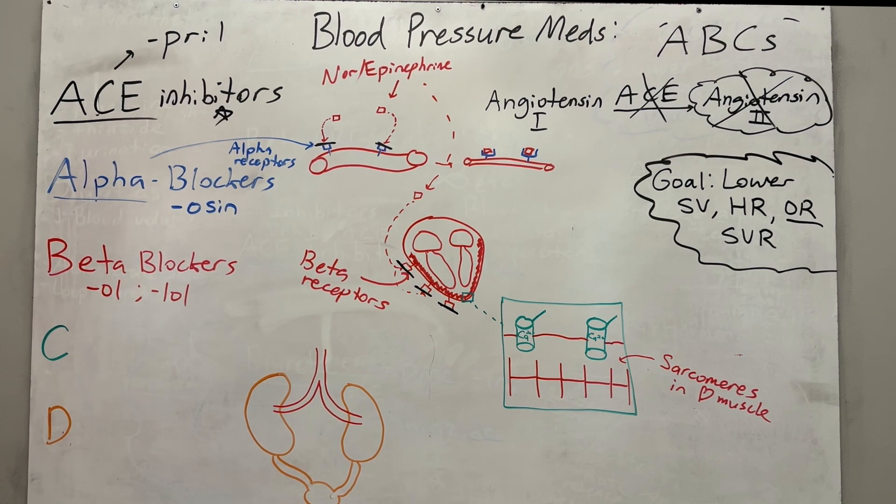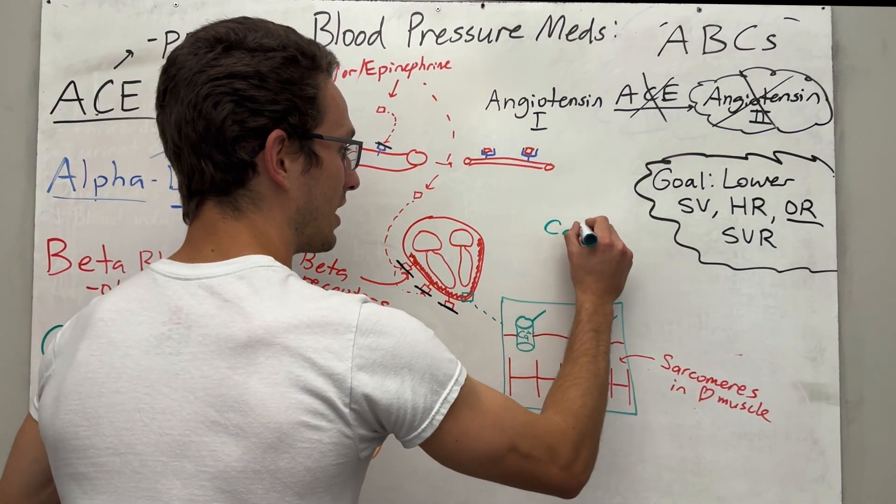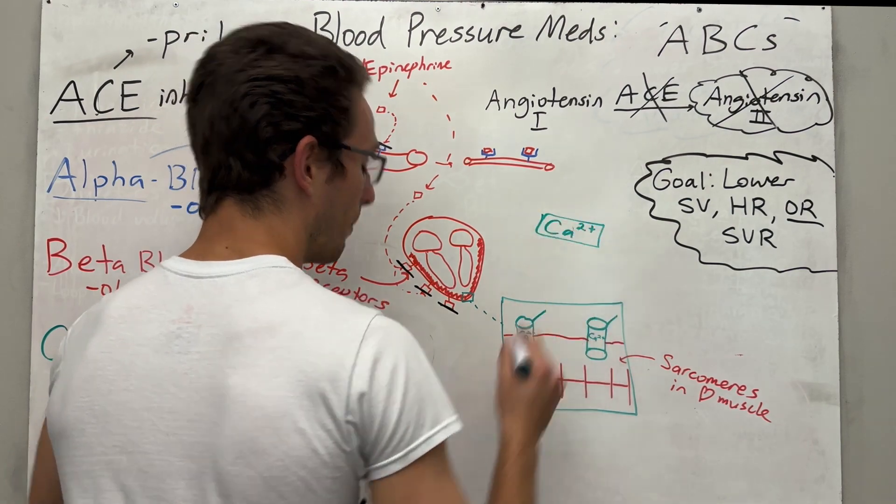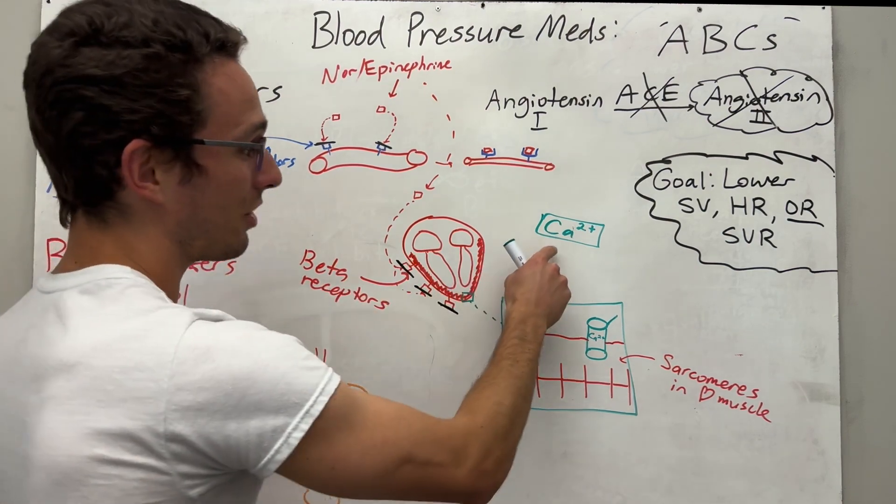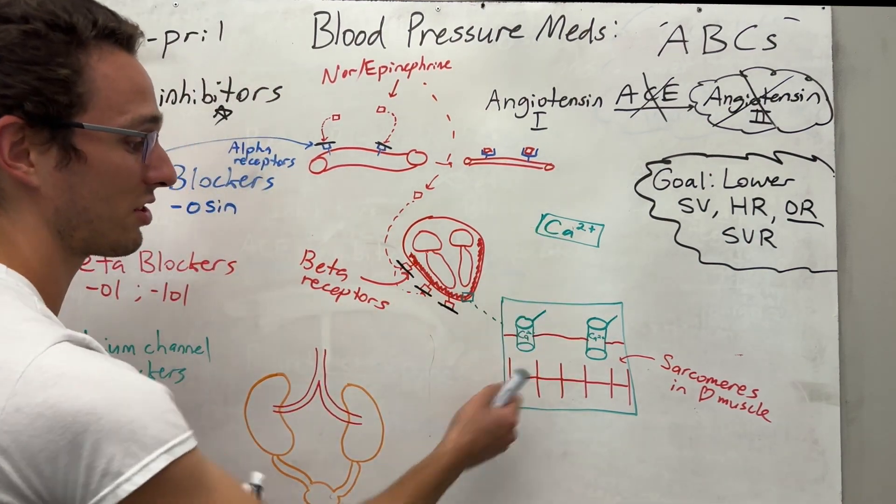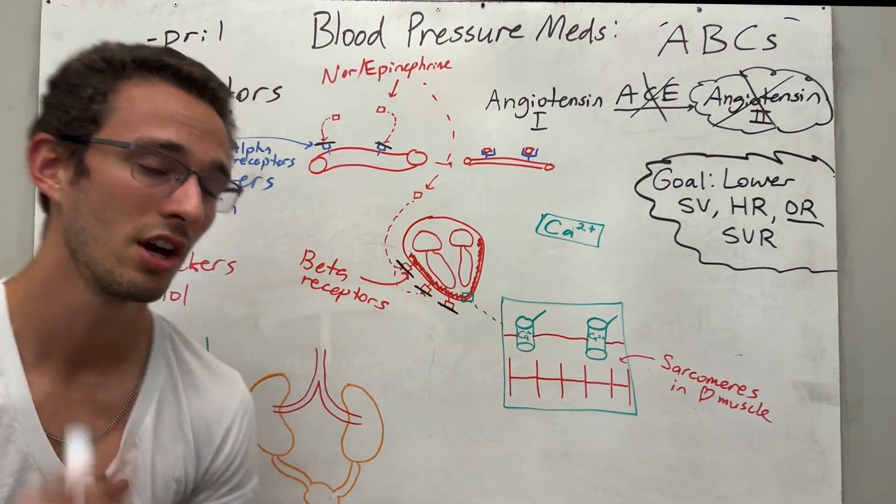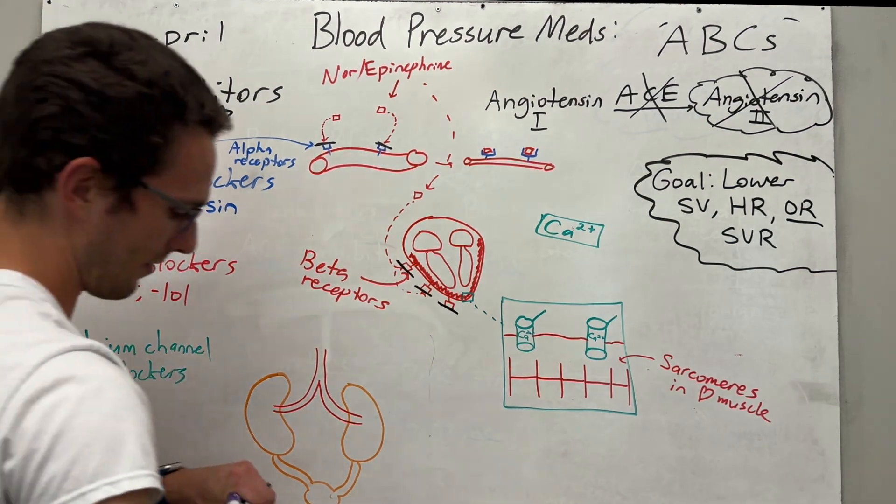Next one up, we've got C. C stands for calcium channel blockers. If you don't know this already, you need to. Calcium, calcium as the ion is a very big indicator of muscle contraction. In fact, anytime we're constricting arteries or we're beating the heart, it takes calcium, this calcium release inside of the cell in order for those muscles to contract.